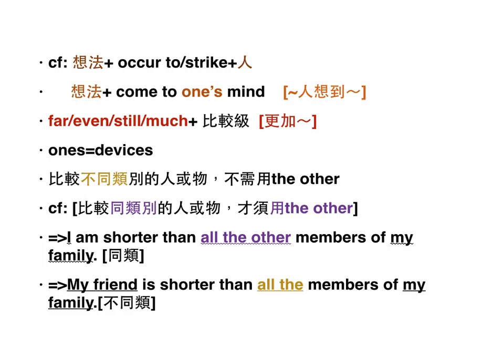當你在比較不同類別的人或物，你不需要用the other；只有比較同類別的時候才需要用the other。例如：I am shorter than all the other members of my family，我是我家人的一部分，所以家庭分成one和the other兩部分，比較時用all the other。但My friend is shorter than all the members of my family，我的朋友不是我家裡的人，比較不同類別，不用加other。